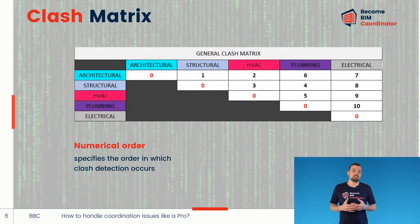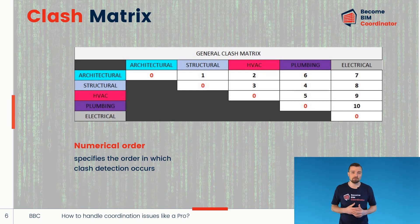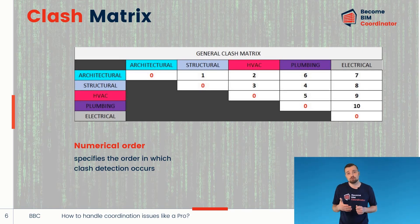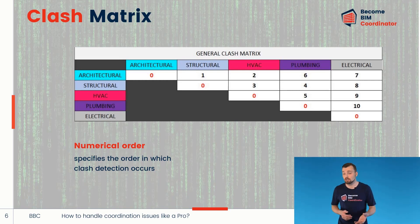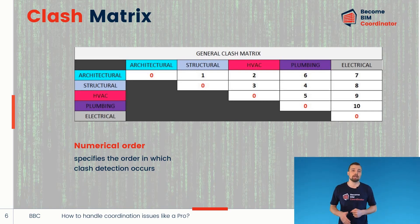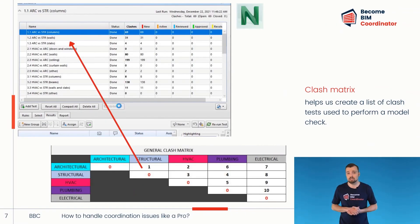The second concept is a clash matrix or coordination matrix. The system hierarchy helps us build this matrix as a simple table. The matrix outlines all models that need to be coordinated, and the numbers in the table specify the order in which clash detection occurs. We treat clashes found in the structural and architectural models as higher priority because these disciplines have a direct impact on the location of other building systems.